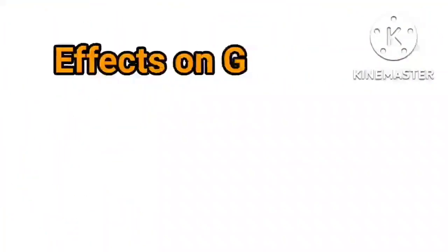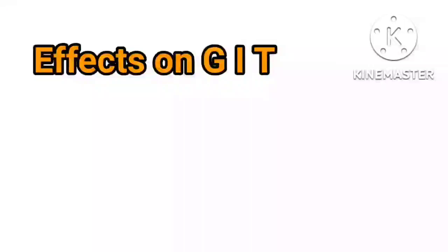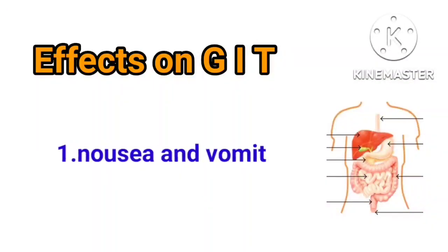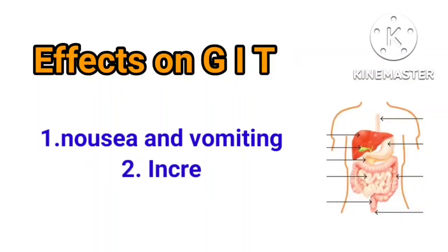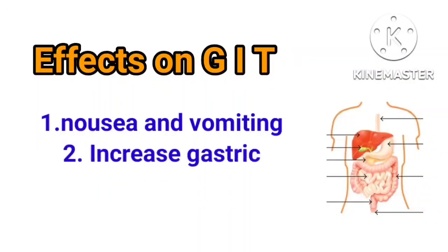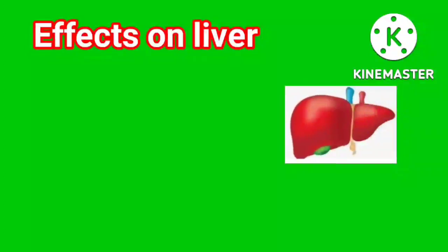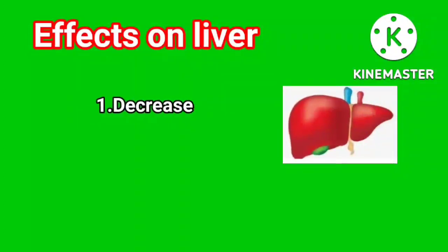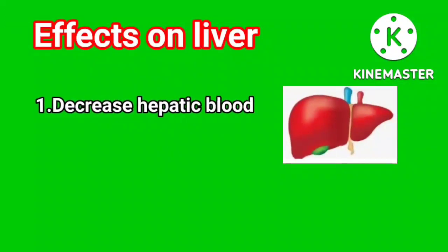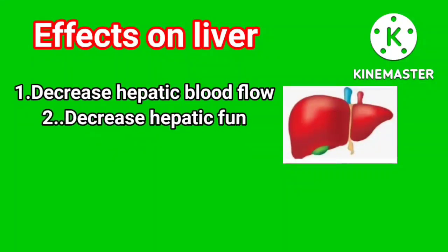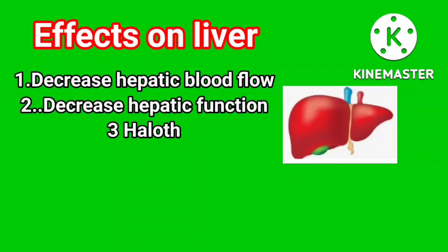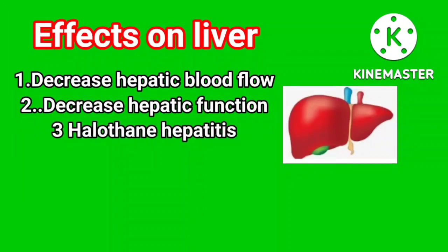Effects on the GIT: halothane causes nausea and vomiting, and increases gastric emptying time. Effects on the liver: it decreases hepatic blood flow, decreases hepatic function, and causes halothane hepatitis.